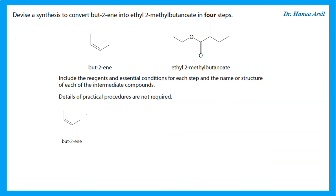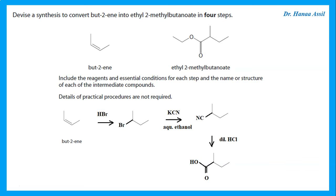Devise a synthesis to convert butene to ethyl-2-methylbutanoate (an ester) in four steps. Starting with butene: add HBr to form a bromoalkane, then react with KCN in aqueous ethanol to replace Br with a cyanide group — adding the extra carbon. Then use dilute hydrochloric acid to hydrolyse the nitrile to the carboxylic acid. Finally, react with ethanol in the presence of sulfuric acid to form the required ester.